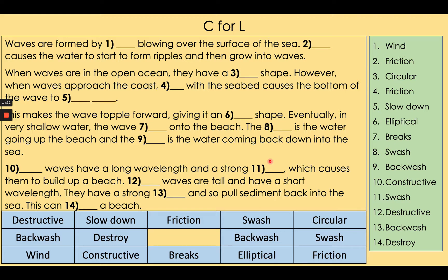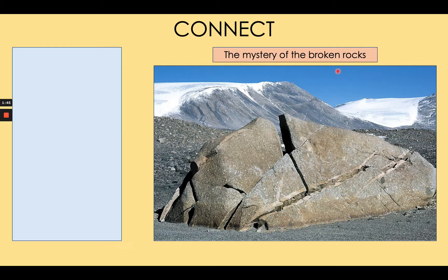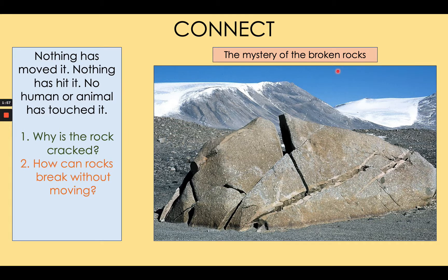To introduce this lesson I'm going to show you a photo, a mystery of sorts. Use your knowledge to answer the questions about the photo. It's a rock that's been fractured in several places. You can see in the distance there are icy cold surfaces of mountains. Nothing has moved it, nothing has hit it, no human or animal has touched it, and yet it is broken. Why do you think the rock is cracked? How can rocks break without moving?